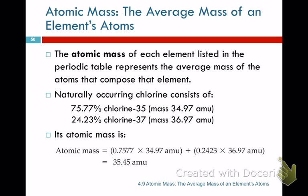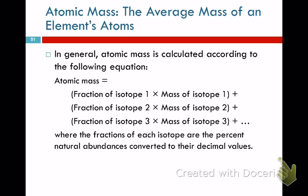It doesn't matter how many isotopes there are — you do the same process: multiply them out, add them together, divide by 100. For example, if there are 10 isotopes, it's the mass of the first times its percent, plus the mass of the second times its percent, and so on, then divide by 100.